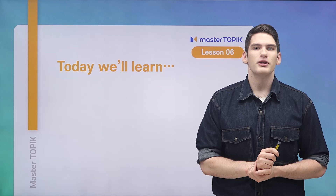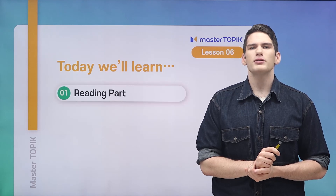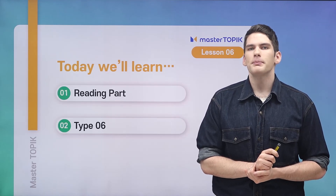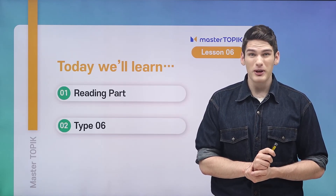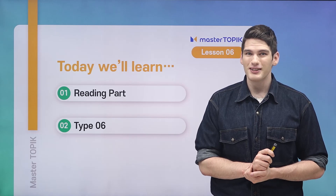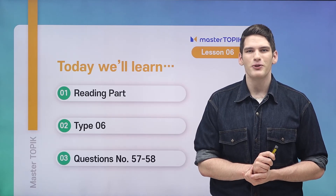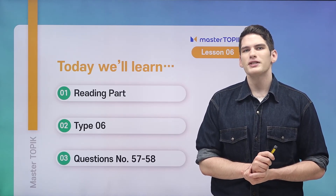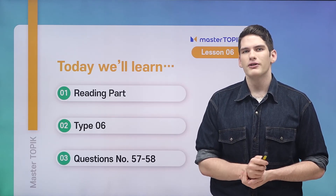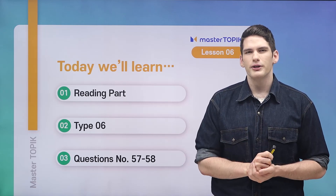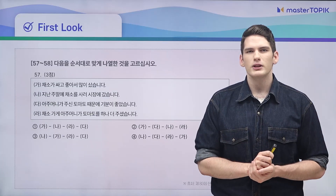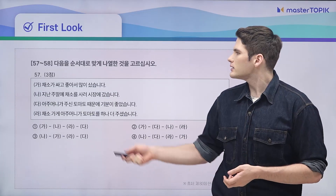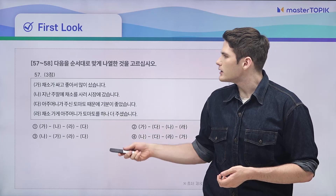Today we're going to be learning about the reading part type number six. We've learned so much already — let's just do a little bit more. It's going to be questions number 57 to 58. So we're going a little bit back in the order here.